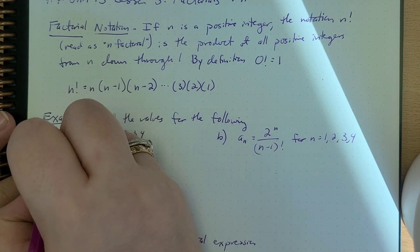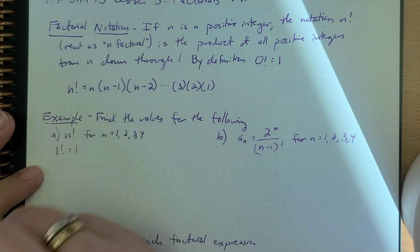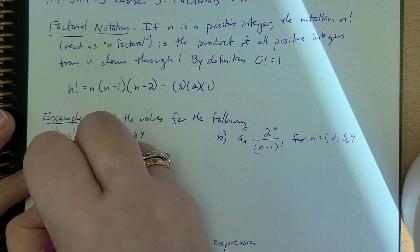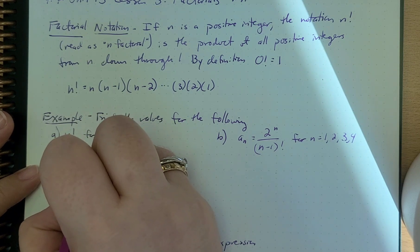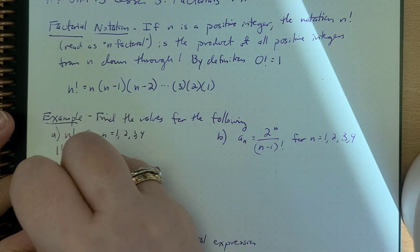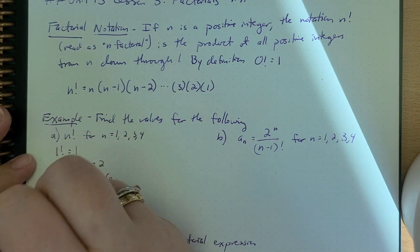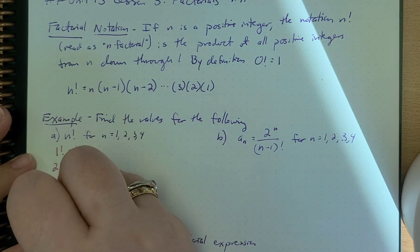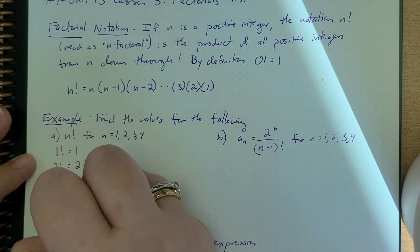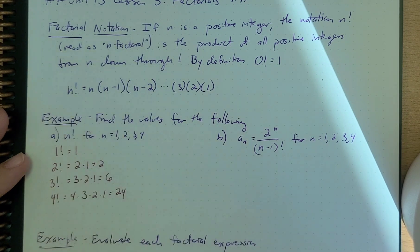So 1 factorial is just equal to 1. 2 factorial is equal to 2 times 1, which is equal to 2. 3 factorial is equal to 3 times 2 times 1, which is equal to 6. 4 factorial is equal to 4 times 3 times 2 times 1, which is equal to 24.